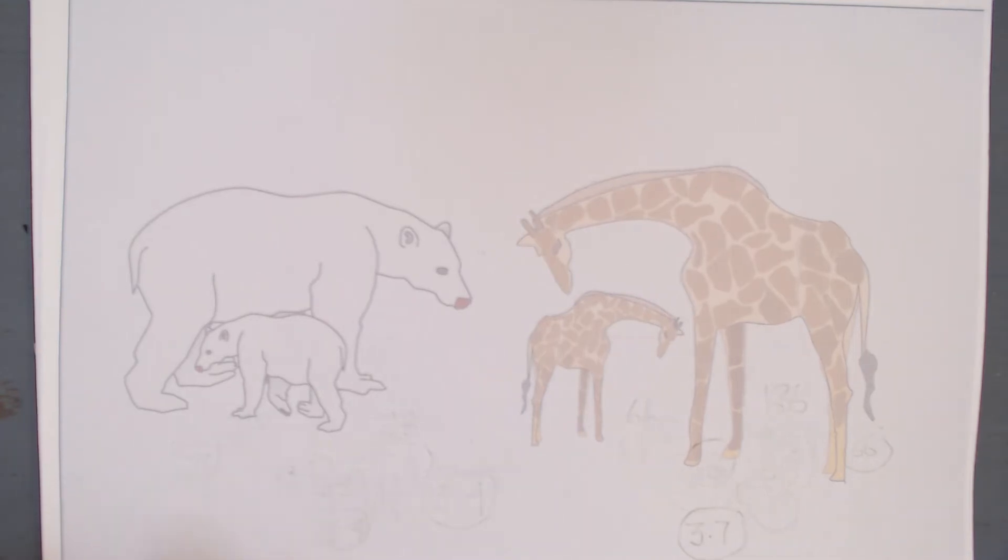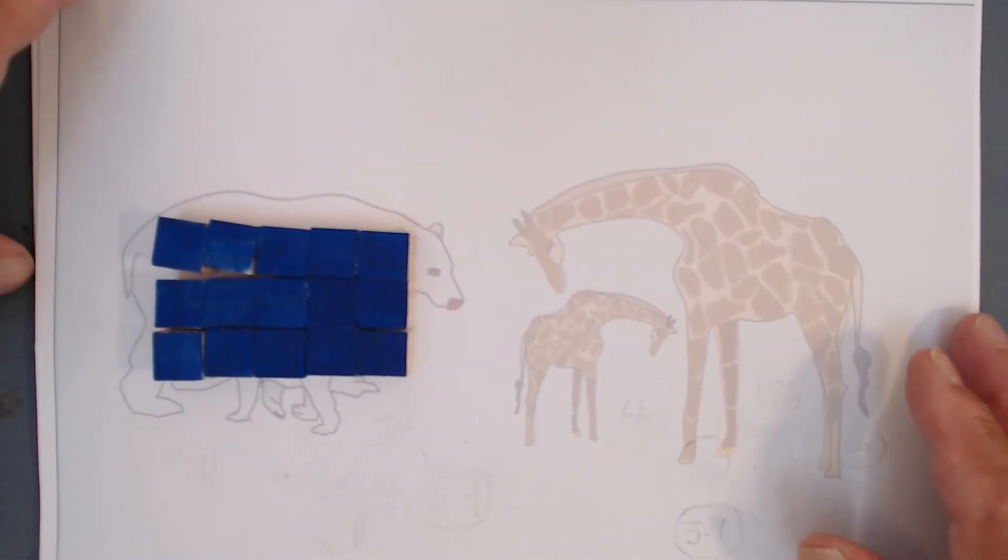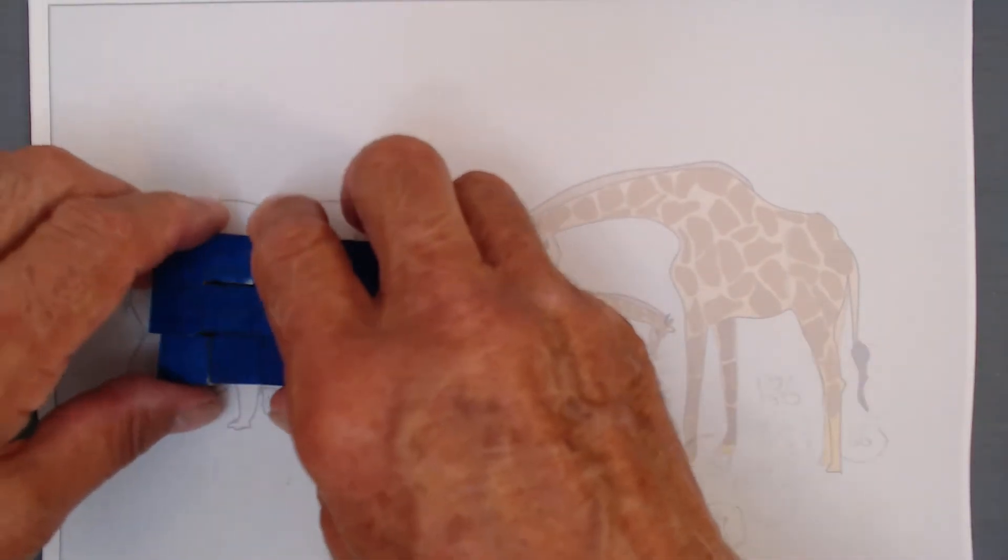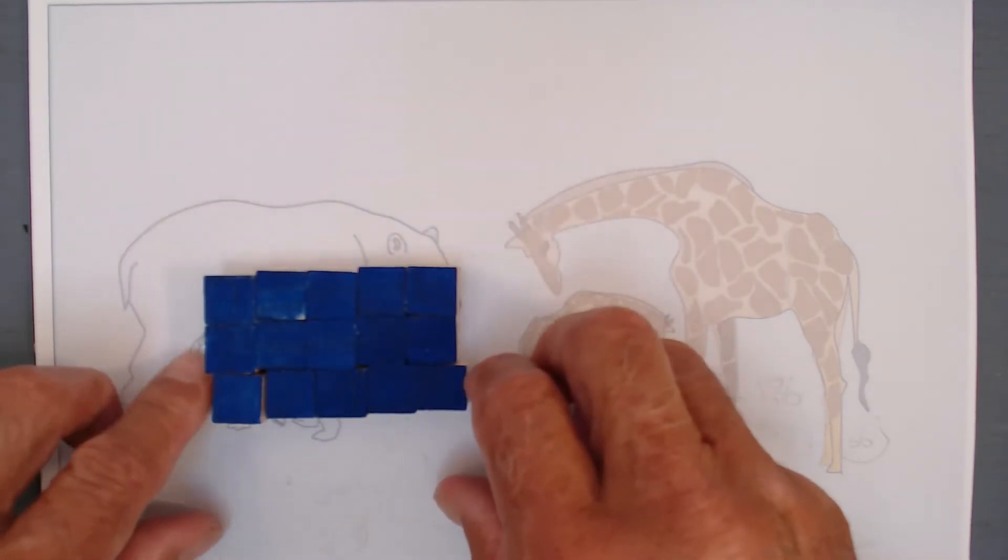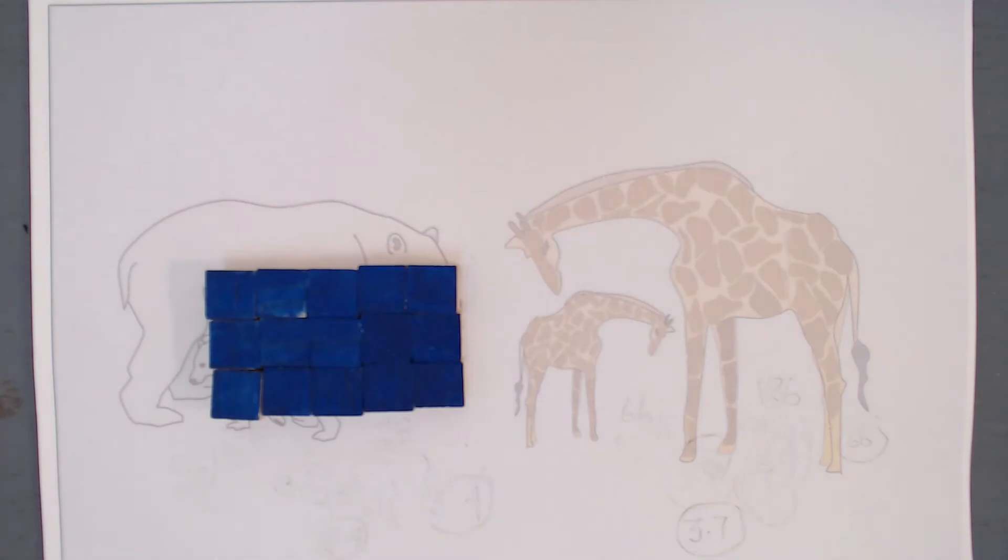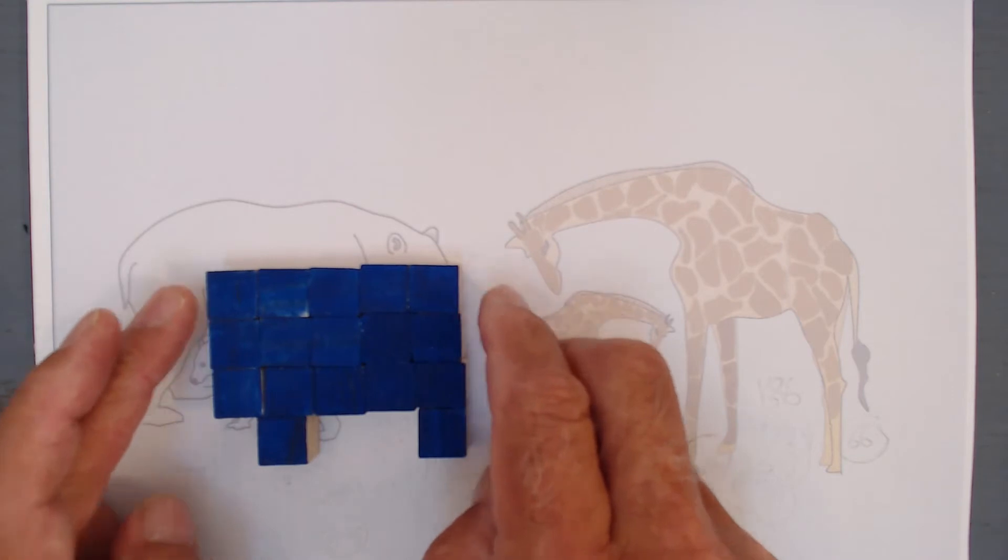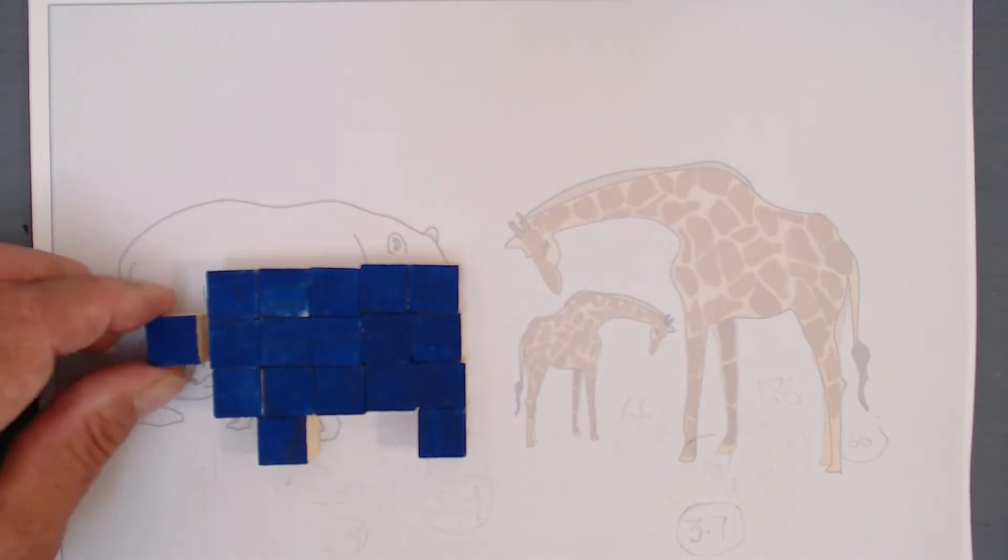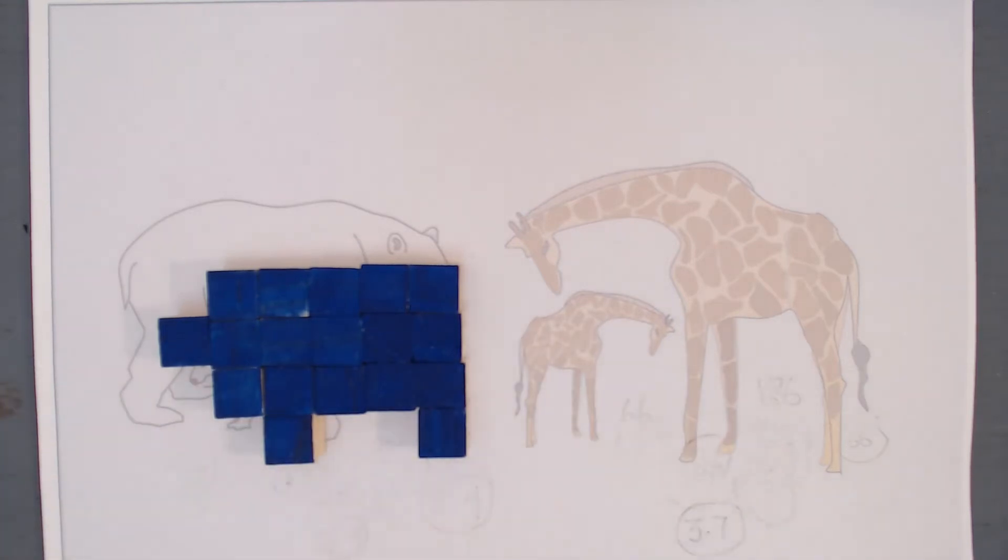So here is my animal in the cold climate. I'm representing the animals by these wooden blocks, and I've got 18 of them there. Now the animal in the cold climate is likely to have a big chunky body and short chunky legs, like so, and a head of course on the end, there we are, like that. Now that's my animal that lives in the cold climate.